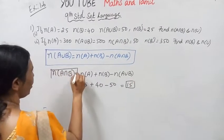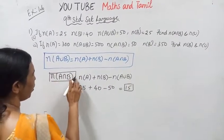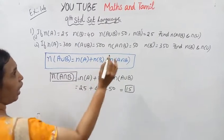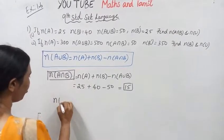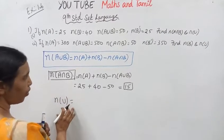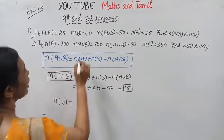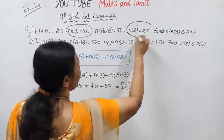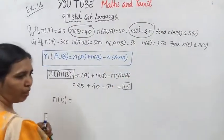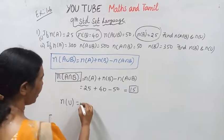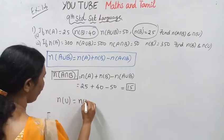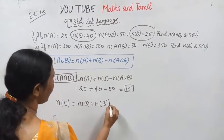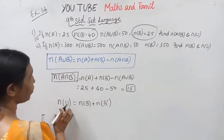N of A intersection B. The answer is 15.